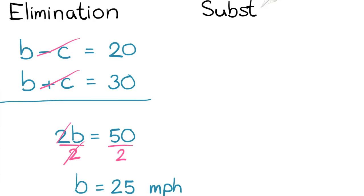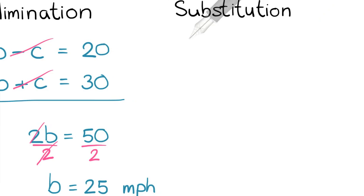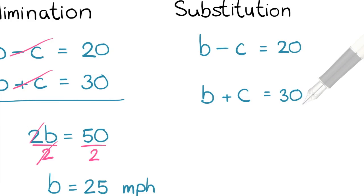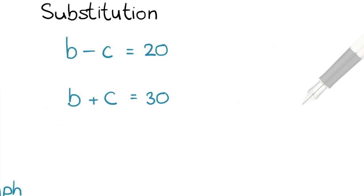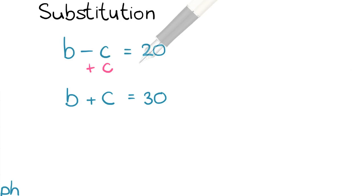Now let's take a look at the substitution method. We ought to have the standard form. Since we have it, I'm going to recopy it and then we start. First, solve for one variable in terms of another. I choose b, and it doesn't matter which equation. b equals c plus 20. Then plug in the second equation with that.